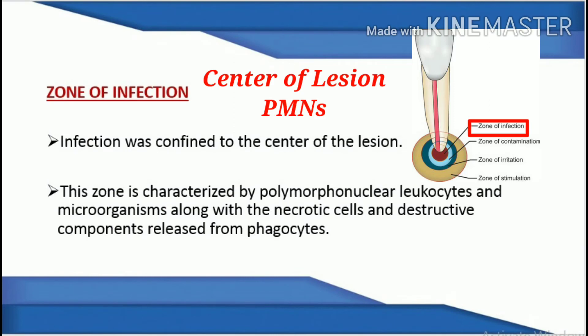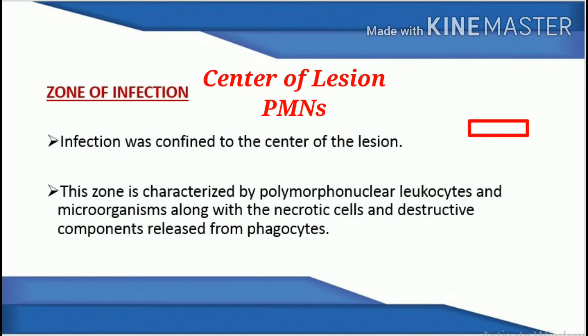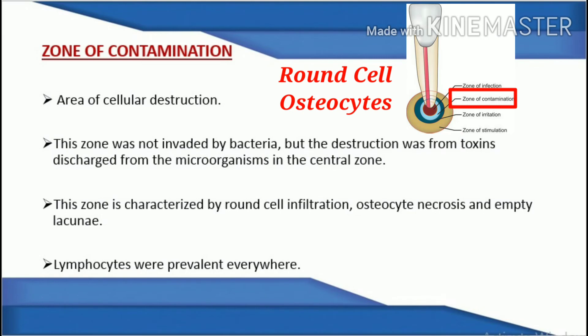Zone of infection: infection was confined to the center of the lesion. This zone is characterized by polymorphonuclear leukocytes and microorganisms along with necrotic cells and destructive components released from phagocytes. Zone of contamination: this is an area of cellular destruction. This zone was not invaded by bacteria, but destruction was from toxins discharged from microorganisms in the central zone. It is characterized by round cell infiltration, osteocyte necrosis, and empty lacunae, with lymphocytes prevalent everywhere.